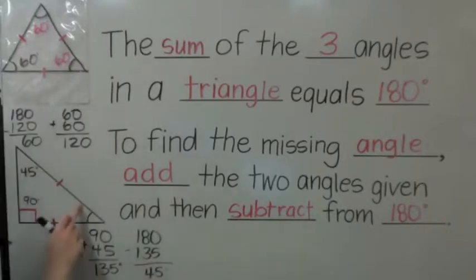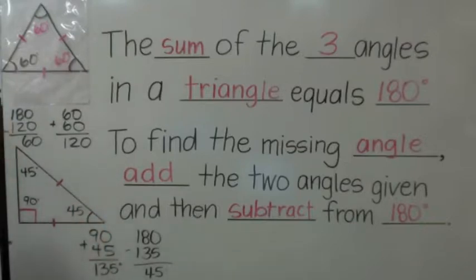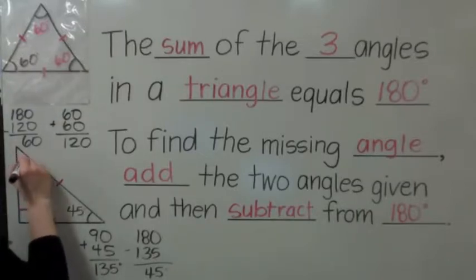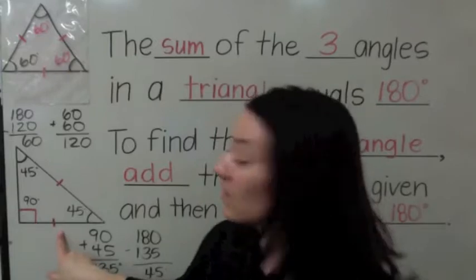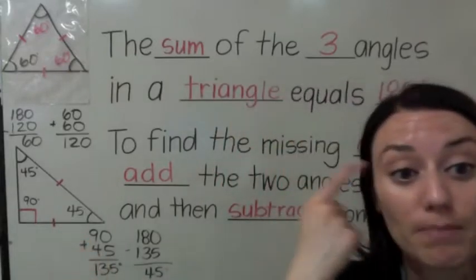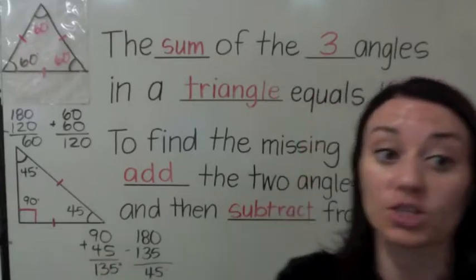This missing angle is 45 degrees, which shows you the special right triangle is called a 45-45-90. Two sides are equal, and so are two angles. When two sides and their opposite angles are equal, we call this an isosceles triangle. So remember, 45-45-90 is an isosceles right triangle.